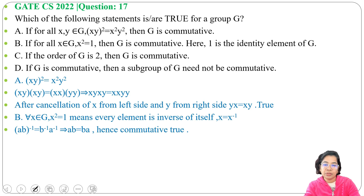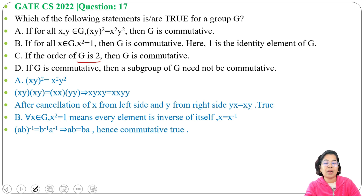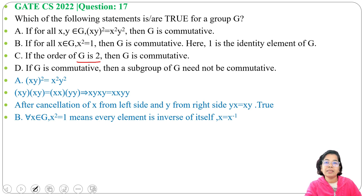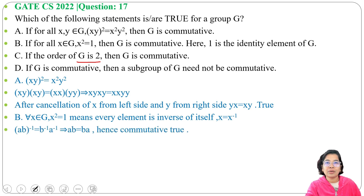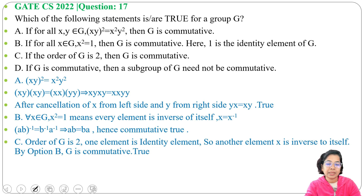Next, Option C: if the order of G is 2, then G is commutative. Order 2 means one element is the identity and the other is its own inverse. From Option B, if every element is its own inverse then G is abelian. Also, if the order of a group is a prime number, it is cyclic and therefore abelian. Since 2 is prime, G is commutative.